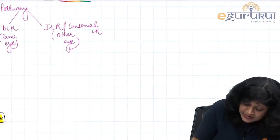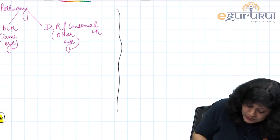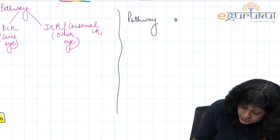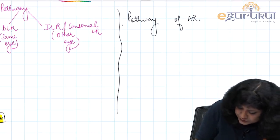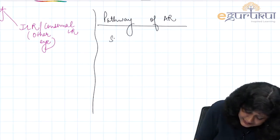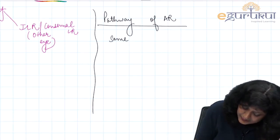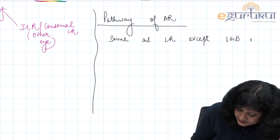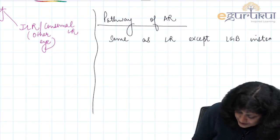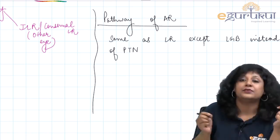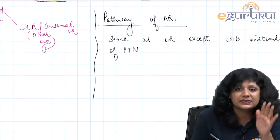The accommodation reflex pathway is the same as the light reflex pathway except that it goes through the lateral geniculate body instead of the pre-tectal nucleus, with the rest being the same.